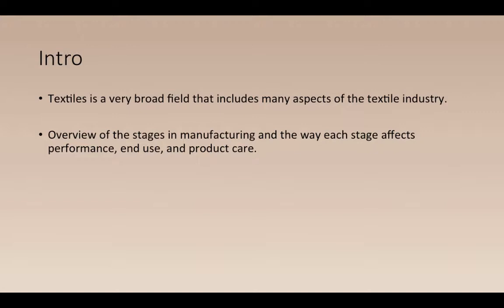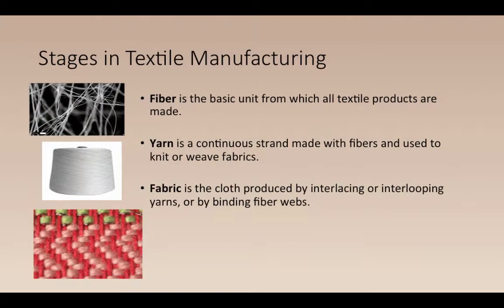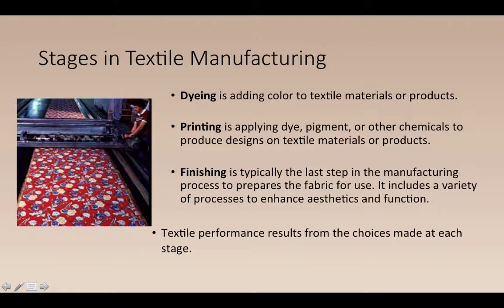Textiles is a broad field — not just apparel. The stages of manufacturing start with the fiber, the basic unit, which are hair-like structures. Fibers are spun into yarn — a continuous strand. Some fibers are long, called filament fibers; short fibers, like cotton, are called staple fibers. These yarns are then put into fabric by interlacing, looping, or binding fibers into webs for non-woven fabrics.